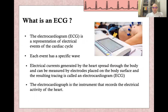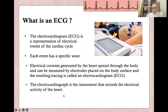What is an ECG? An ECG, or electrocardiogram, is a representation of the electrical events of the cardiac cycle. Each event has a specific wave, and each electrical current generated by the heart spreads through the body and can be measured by electrodes placed on the body surface. The resulting tracing is called an electrocardiogram — the machine that records the activity of the heart.